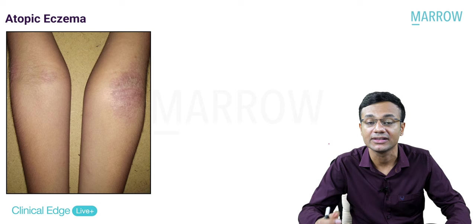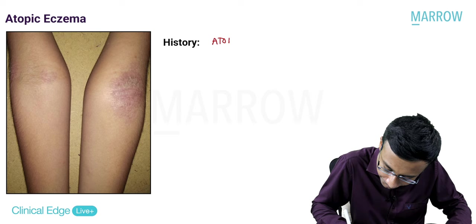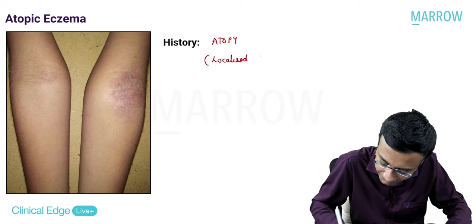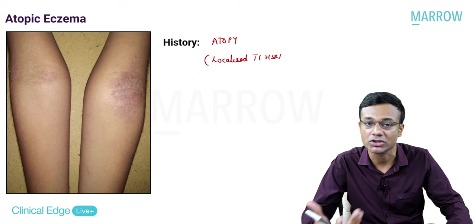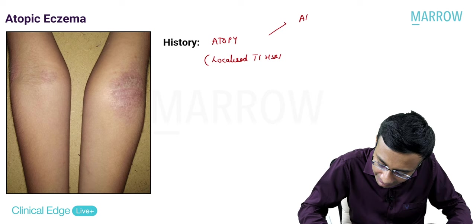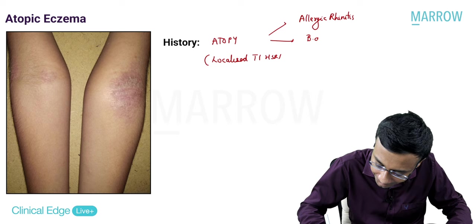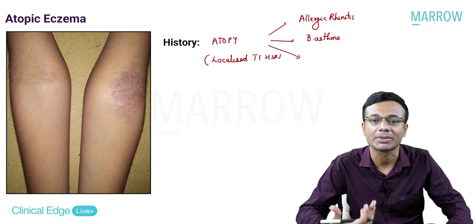The fifth differential is atopic eczema. The most important history is a history of atopy - a localized type 1 hypersensitivity reaction. Atopy can manifest in three systems: upper respiratory tract as recurrent allergic rhinitis; lower respiratory tract as bronchial asthma; and in the skin as atopic dermatitis. The morphology depends on the stage. In the infantile phase, face, scalp, and extensors are involved. In childhood and adult phase, the flexors get involved with red excoriated scaly plaques.